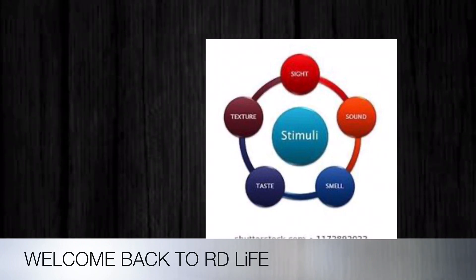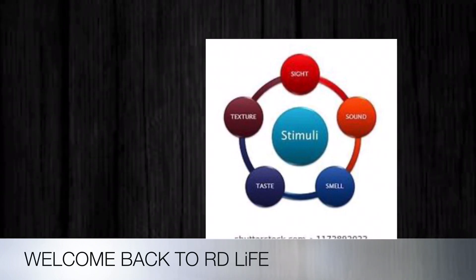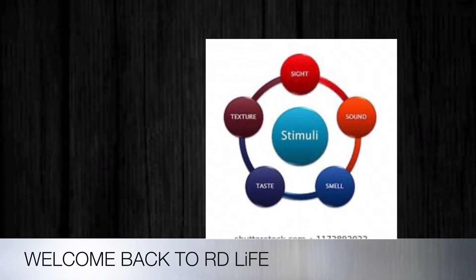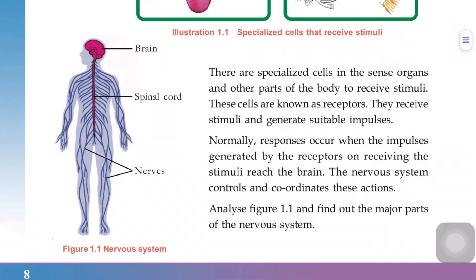What is the difference between external and internal stimuli? What are the examples? What is the function of the nervous system? How are the impulses generated? This is the basic unit.